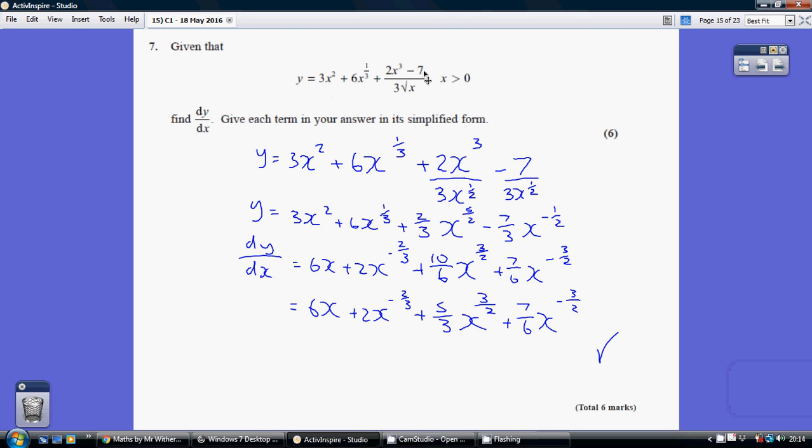Let's start by putting both terms in the numerator over the denominator and writing 3 root x as 3x to the power of a half. So that's 2x cubed over 3x to the half minus 7 over 3x to the half.